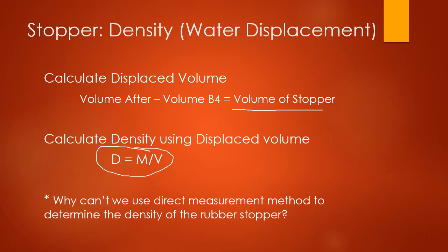Do your subtraction to figure out the volume of the stopper, then calculate the density. Think about why we can't use the direct measurement method for the rubber stopper — if you were listening, you'd be able to figure that out. Also think about what would happen if you tried doing a cork, and consider densities when you answer that question. That's all for the data collection portion of this lab. Look for another video to complete page 16, the graphing portion. Let me know if you have any questions.